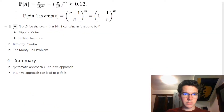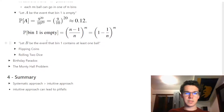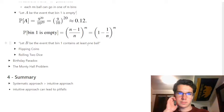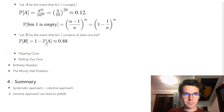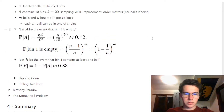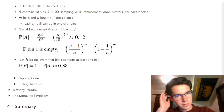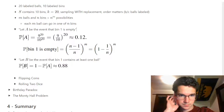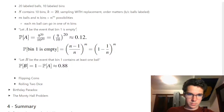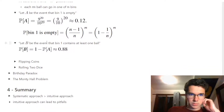Let event B be the event that bin one contains at least one ball. This is essentially the inverse of the previous statement, so the probability is 1 minus P(A) = 1 − (9/10)^20.